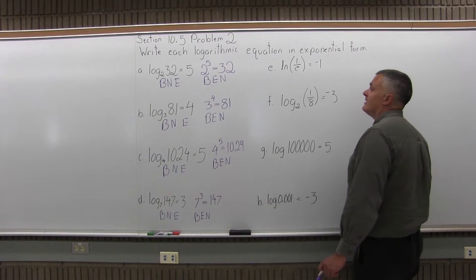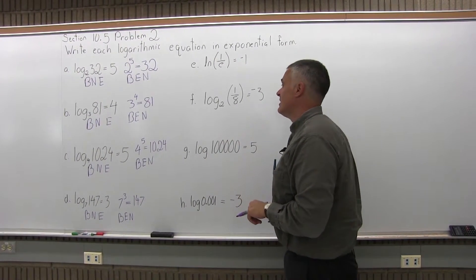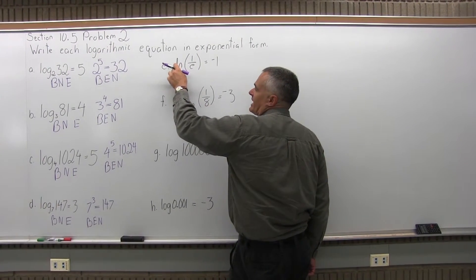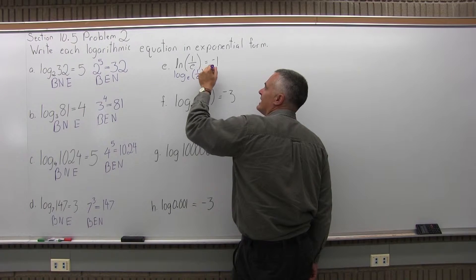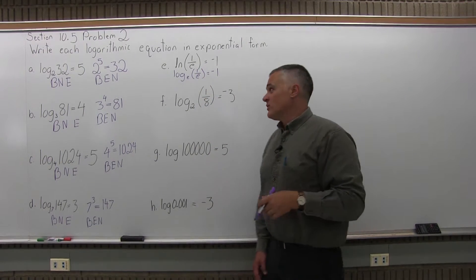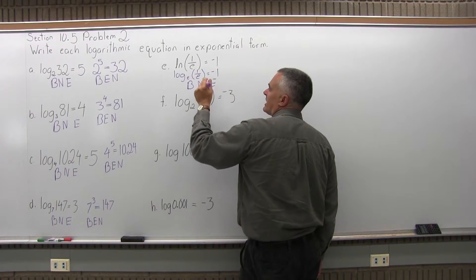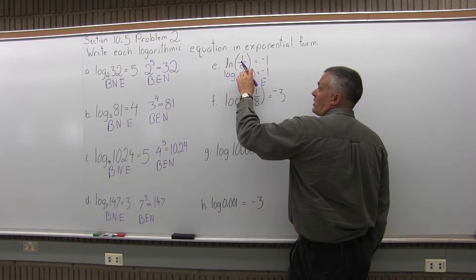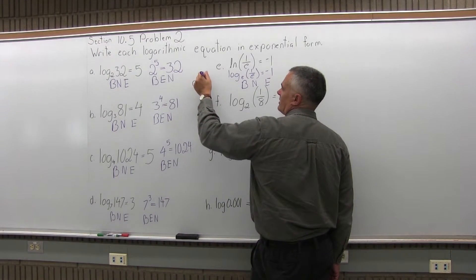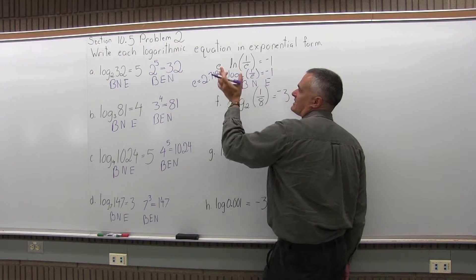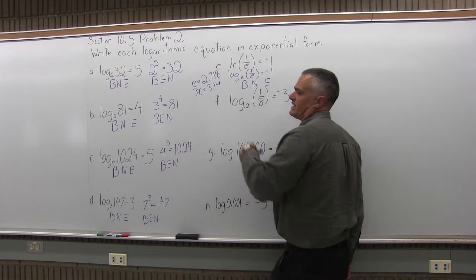Part E says ln — natural log — of 1 over e equals negative 1. This one seems confusing because there is no written base, but there is an implied base. LN for natural log is really log base e. So what we have is log base e of 1 over e equals negative 1. Remember, e is that number from natural science — e is 2.718 and goes on and on. It shows up often enough in natural science that it gets its own symbol, like pi does in geometry, where pi is 3.14 and also goes on and on.